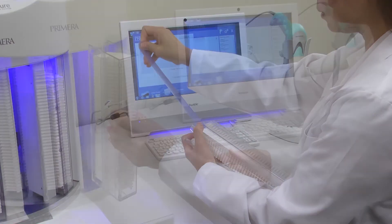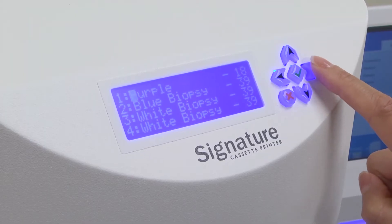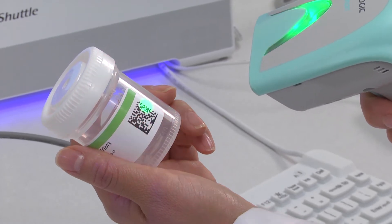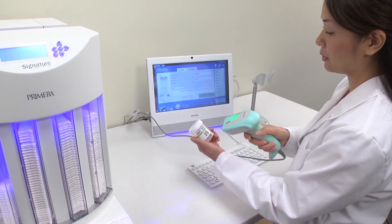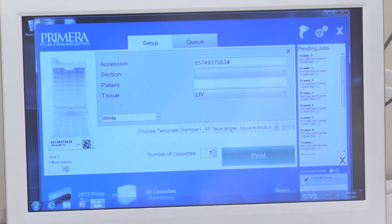Tape cassettes are easily loaded into the hoppers and placed into the unit. Front panel controls tell the machine what type of cassettes you'll be using. A barcode can then be scanned and information is automatically populated in the software. Any additional information can be added in Primera's PT lab software.